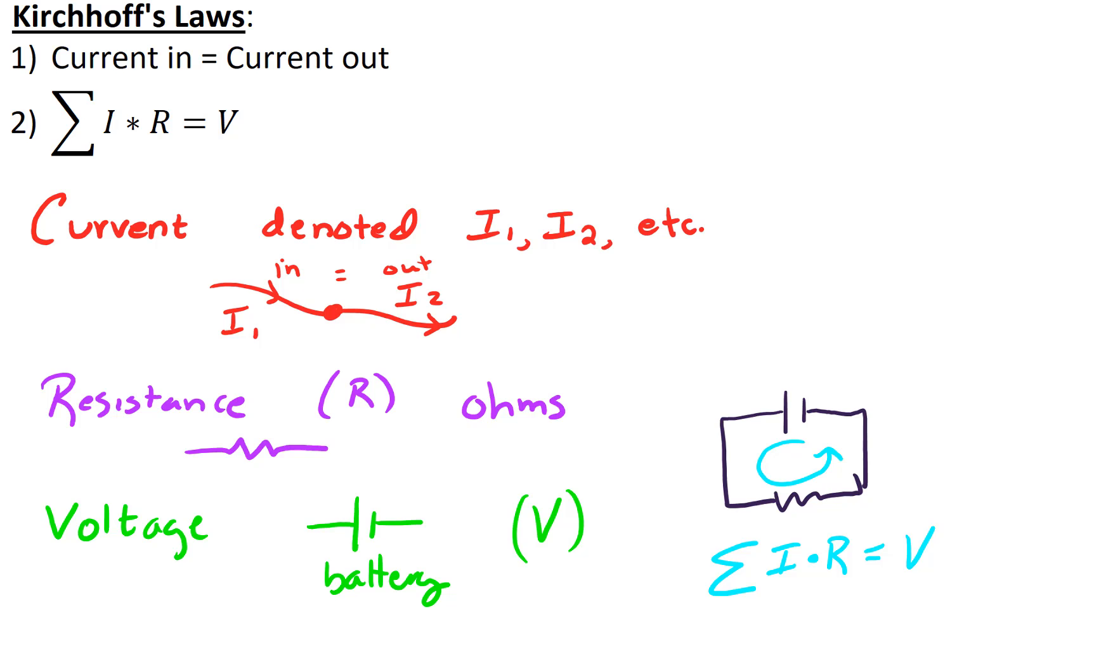And then the second piece of Kirchhoff's Laws says that the sum of current times resistance has to equal voltage. And that's around a closed loop in the network. So resistance is denoted by this little squiggly line that's a resistor in the network. It's denoted with the capital R in terms of our equations. So that's our resistance. It's measured in ohms.